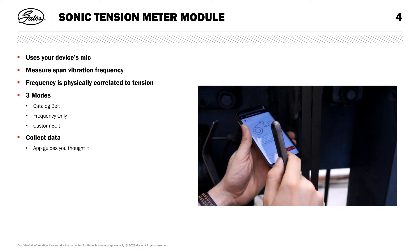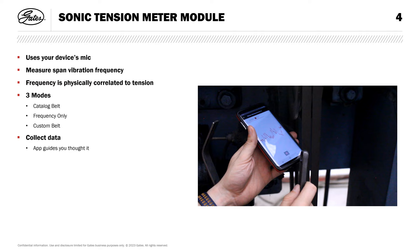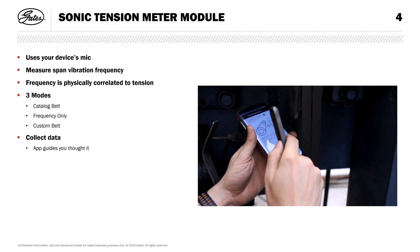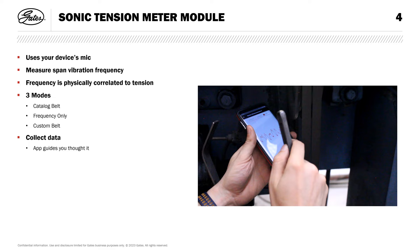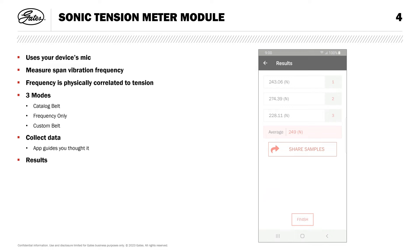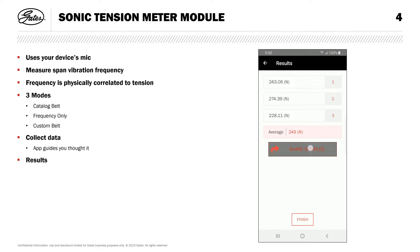You can repeat if needed. I'll tap next, and repeat this process twice more — record, pluck, stop, next — for each of the remaining two measurements. Here we see the results summarized. We have the calculated tension from each measurement, as well as the average. There's also a button at the bottom where you can share the audio recordings for each of the three measurements.